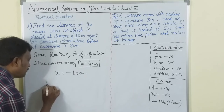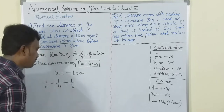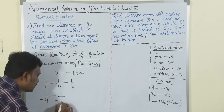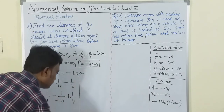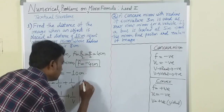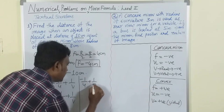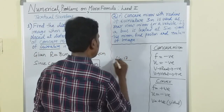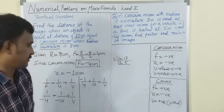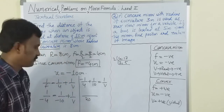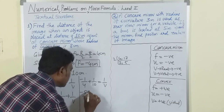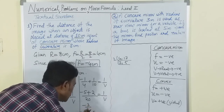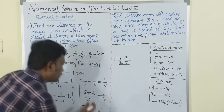So 1/(-4) = 1/(-10) + 1/v. Rearranging: -1/4 + 1/10 = 1/v. The LCM of 4 and 10 is 20. So (-5 + 2)/20 = 1/v, giving -3/20 = 1/v, therefore v = -20/3, which is approximately -6.6 centimeters.